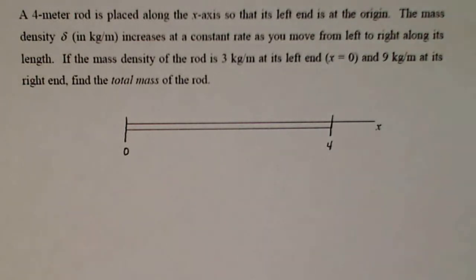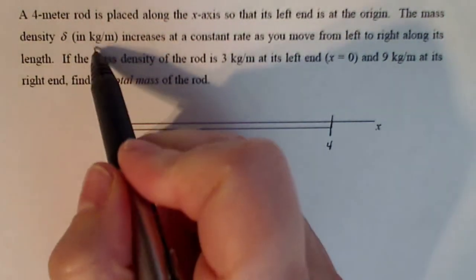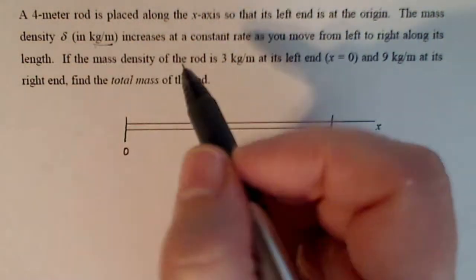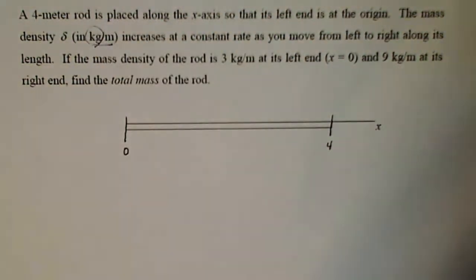If the mass density of the rod is three kilograms per meter at the left end and nine kilograms per meter at the right end, find the total mass of the rod. So mass in this case is going to be kilograms based on the unit of measure that I'm given here.